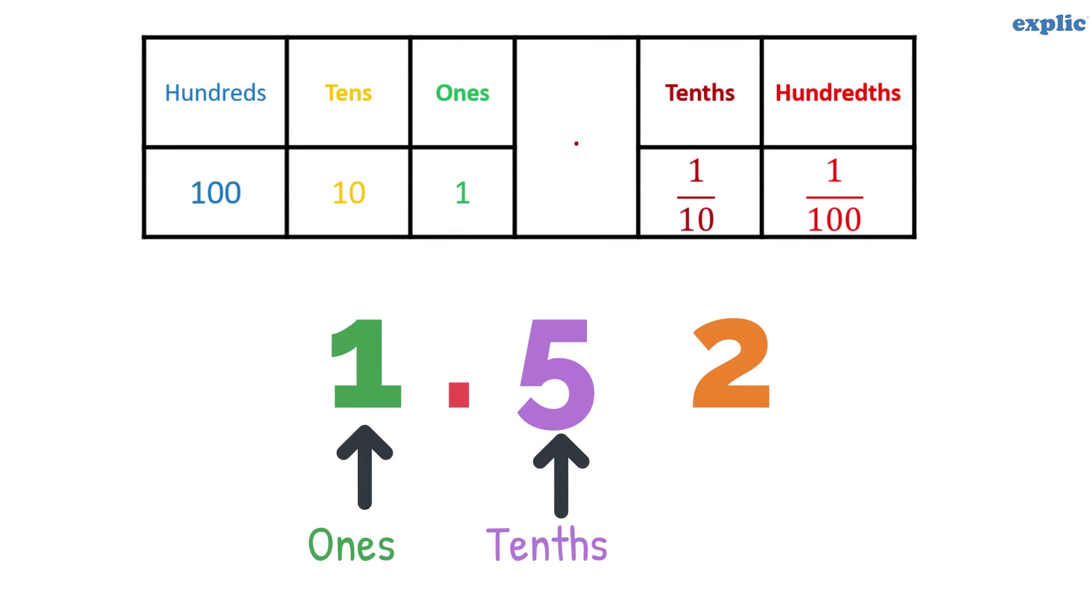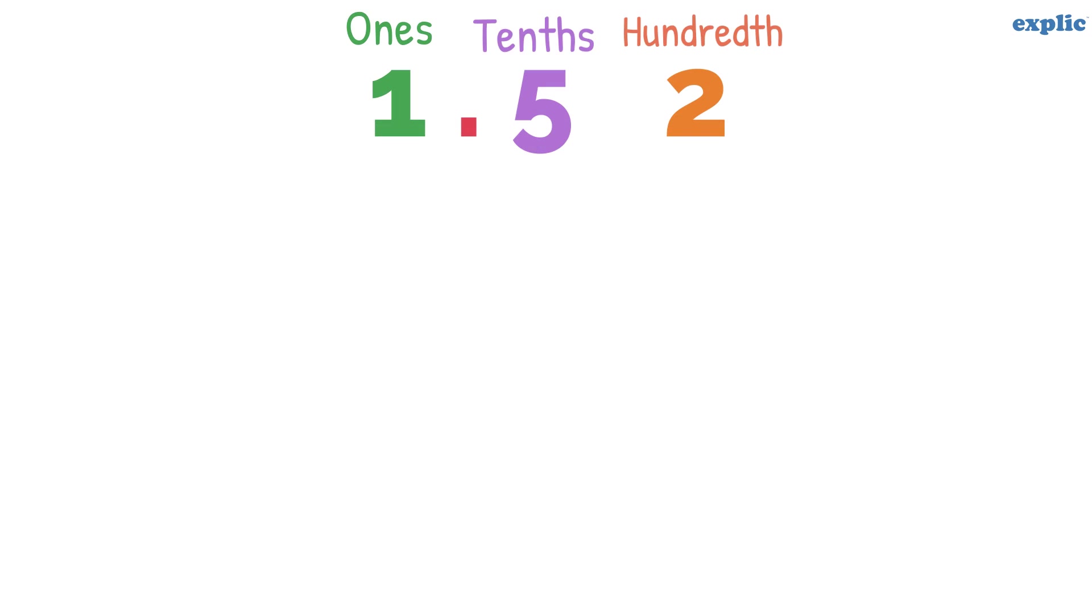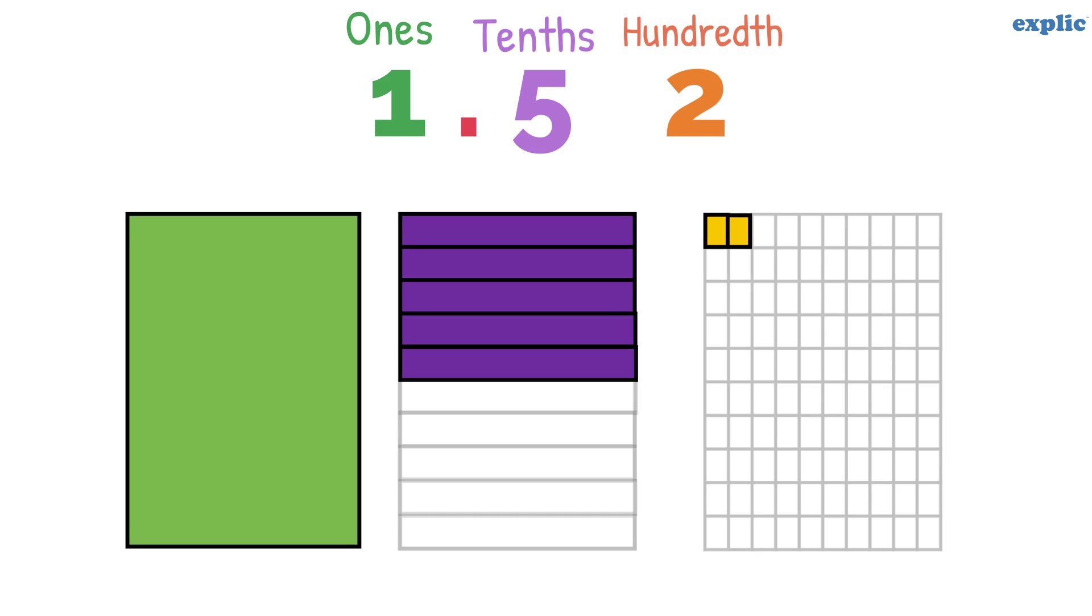The next place is hundredths place, which means 1 part out of 100 parts. 1.523 can be represented as 1 whole and 2 parts out of 100 parts.